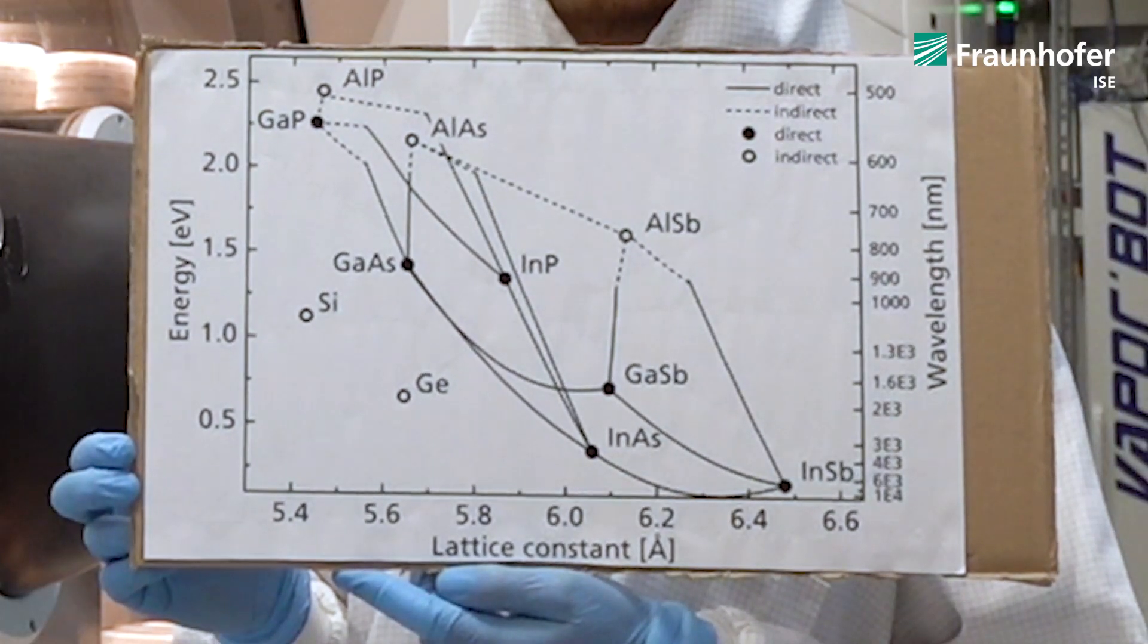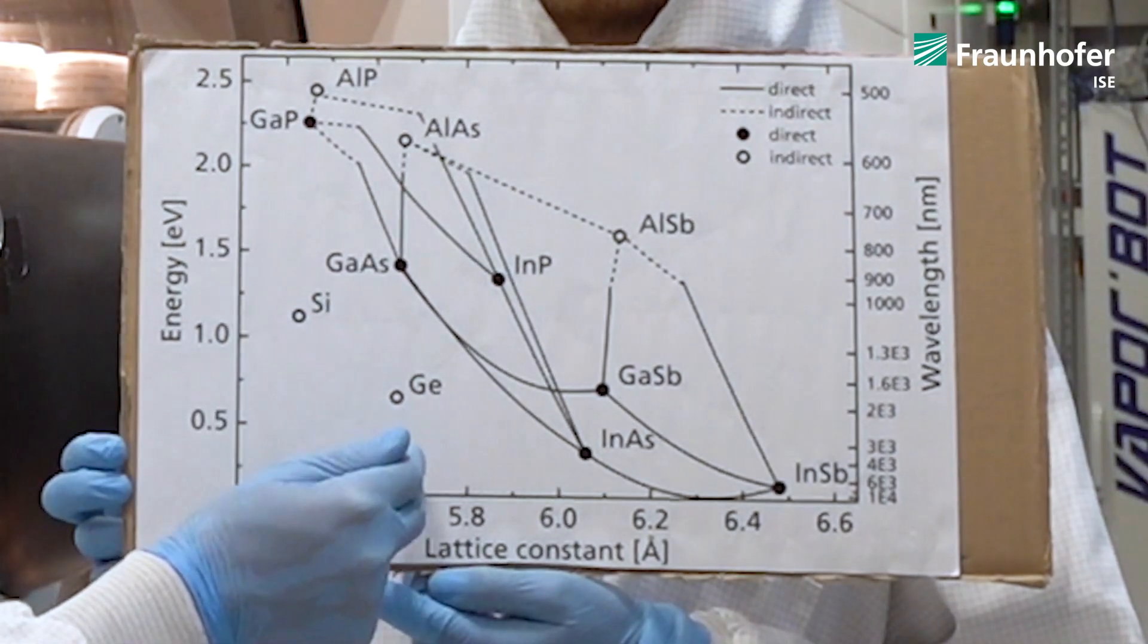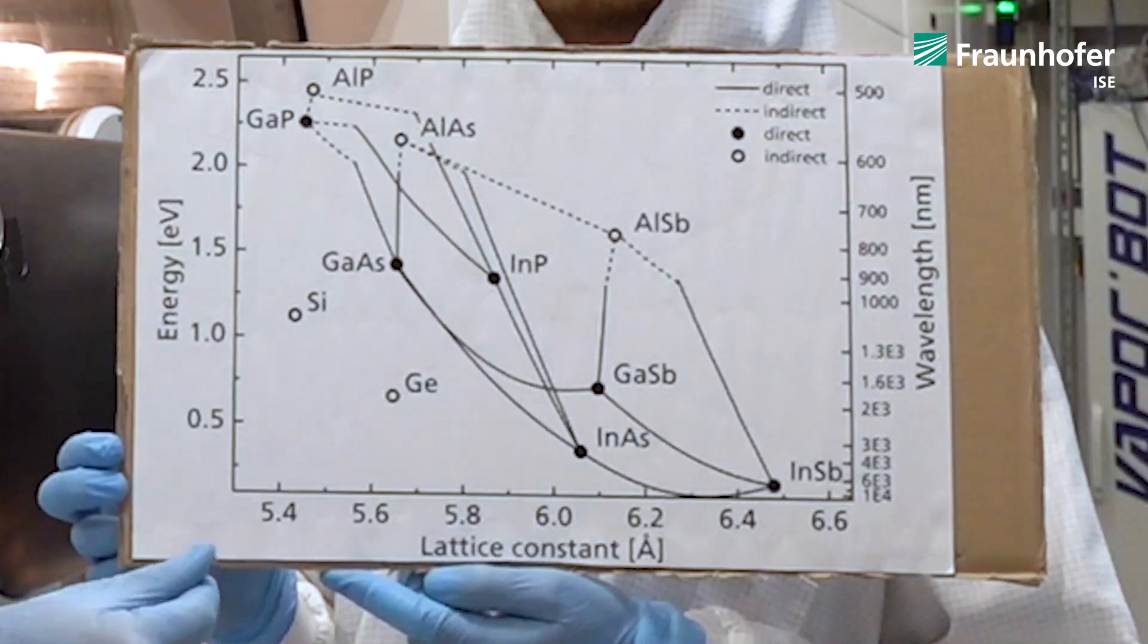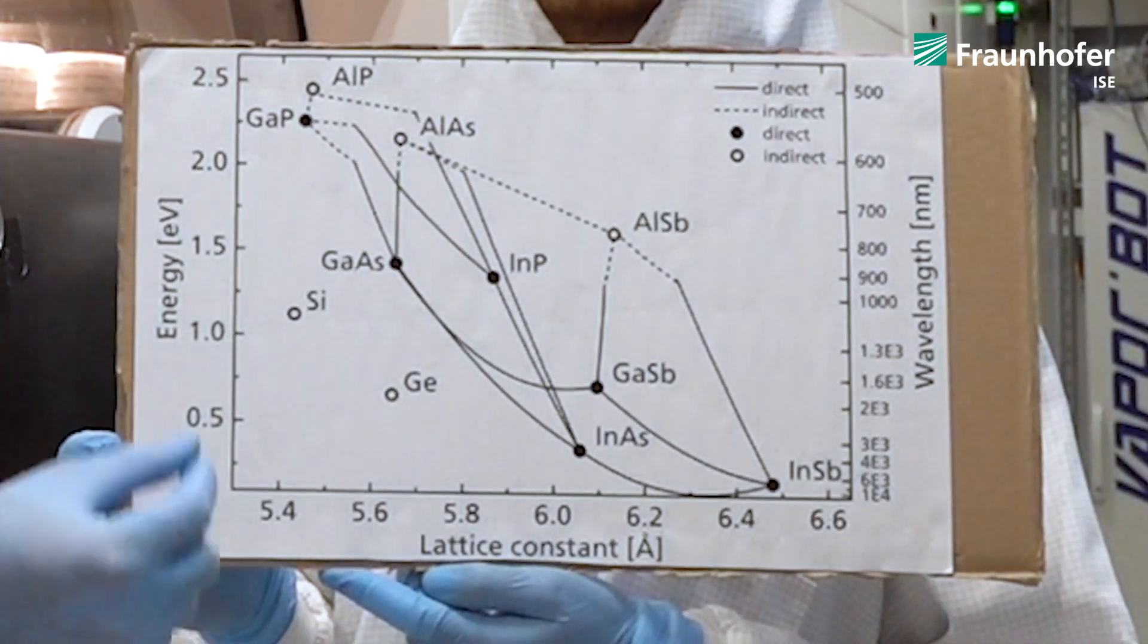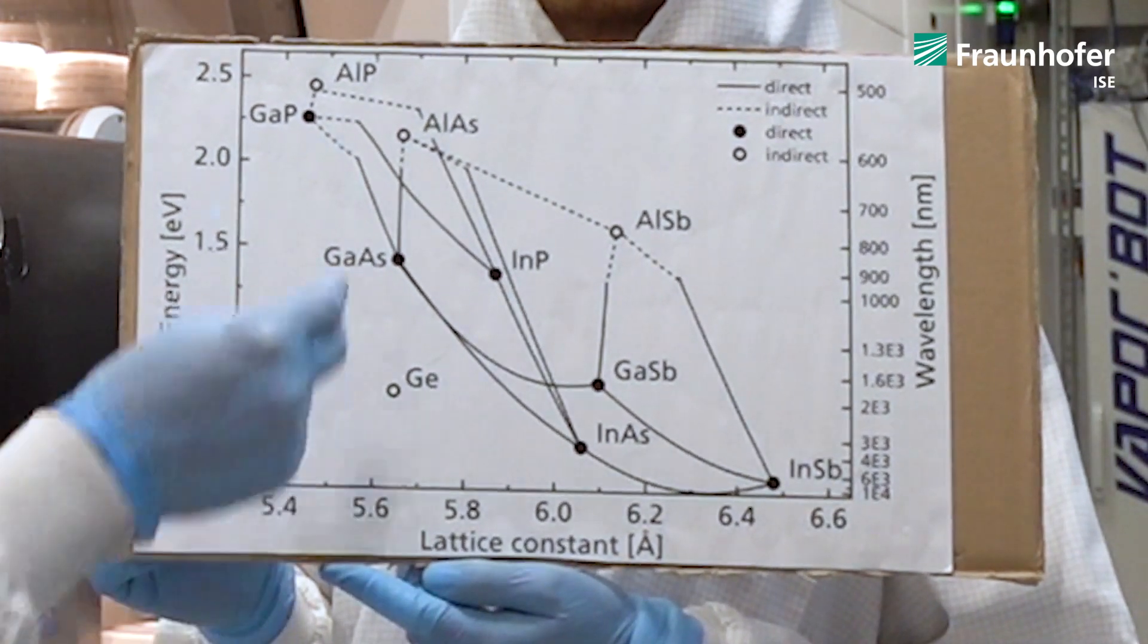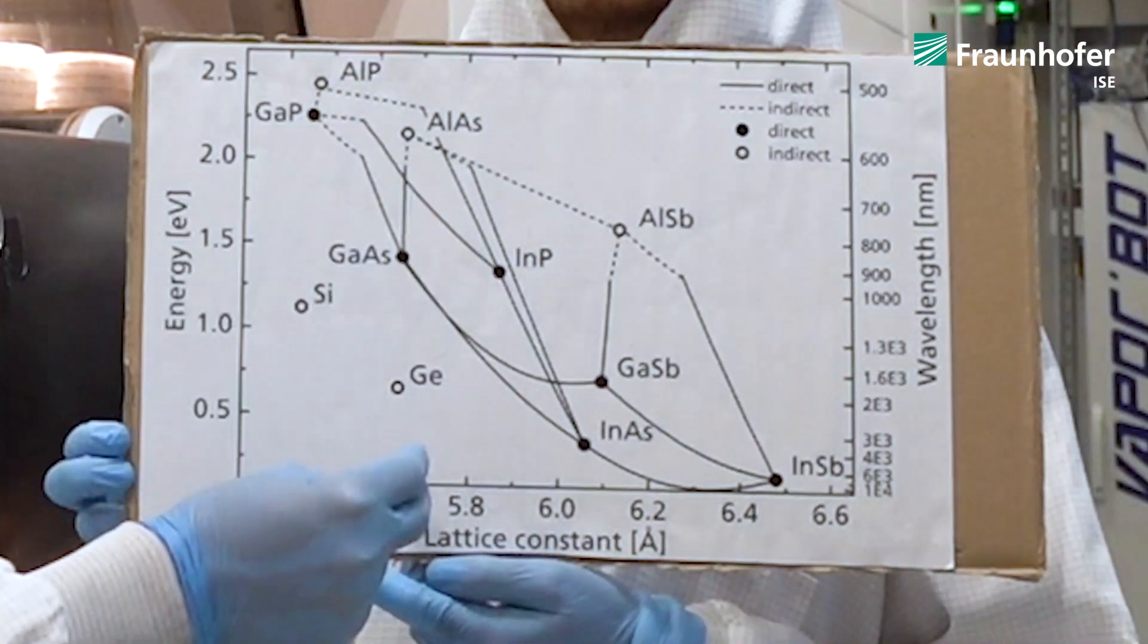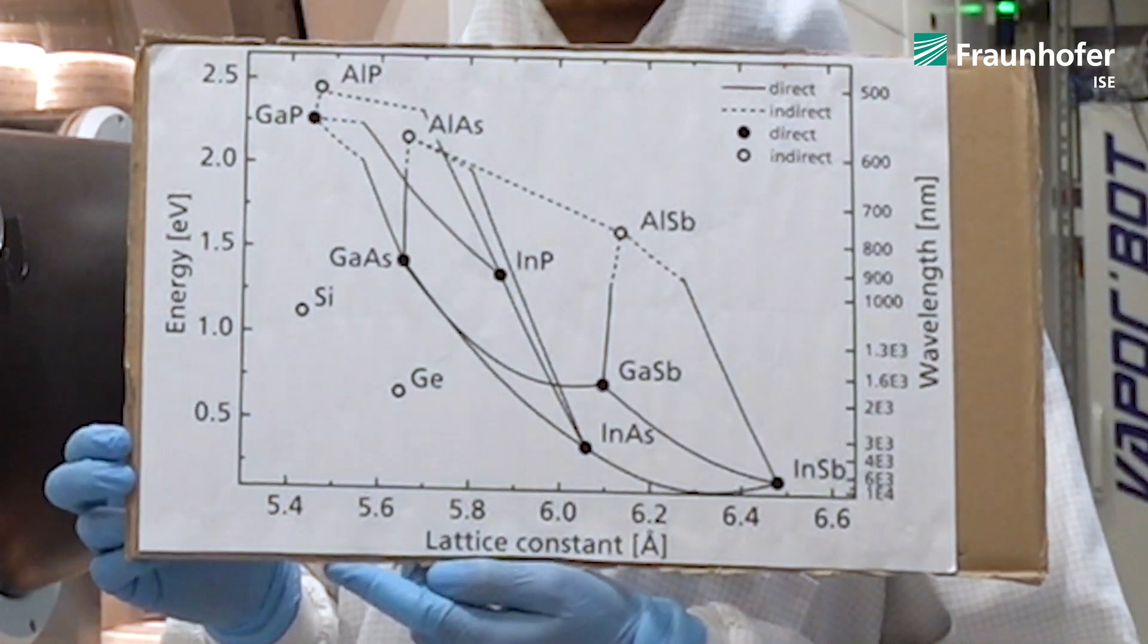In the 50% project we grow four or six junction solar cells and they are lattice matched for the gallium arsenide case. In another video we showed you already how we bond then afterwards these two wafers together in the direct wafer bonding method. We have in the four junction case two solar cells on the gallium arsenide lattice constant and two solar cells on the indium phosphide lattice constant.